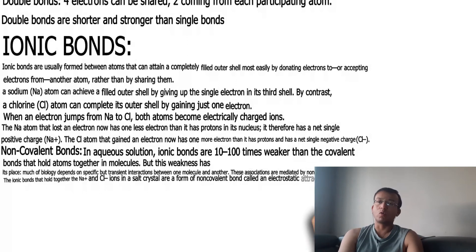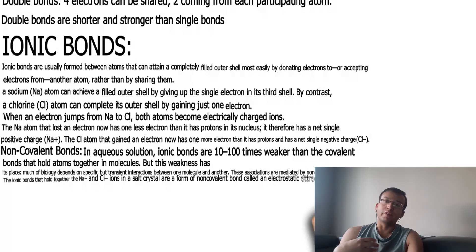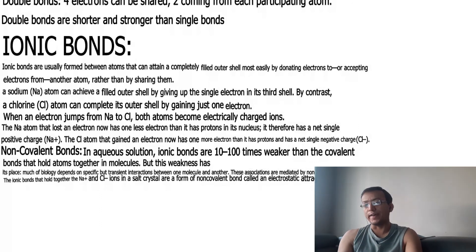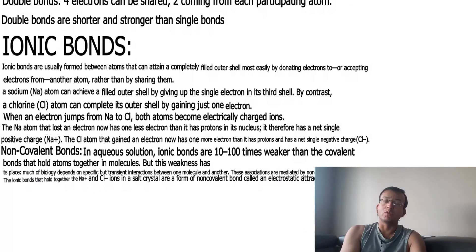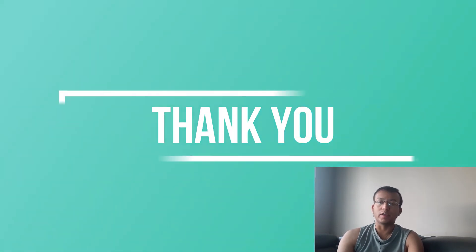So these were covalent bonds, ionic bonds, and non-covalent bonds — the basic chemistry concepts. We are not studying chemistry per se; we are just trying to understand the basics so that when we hear about covalent bonds or ionic bonds in biology, we know what they mean. We'll study further in the next chapter — more basic concepts before going into the details. Thank you for watching!